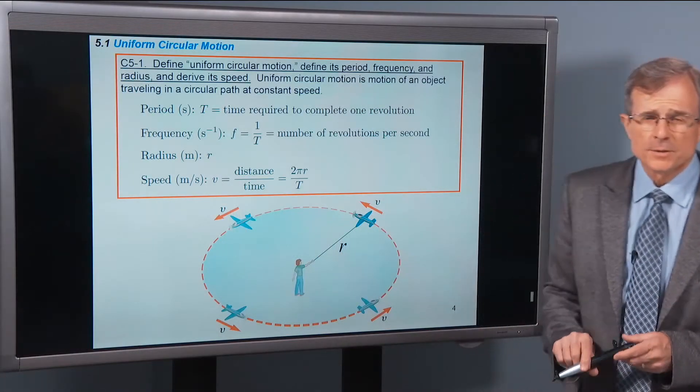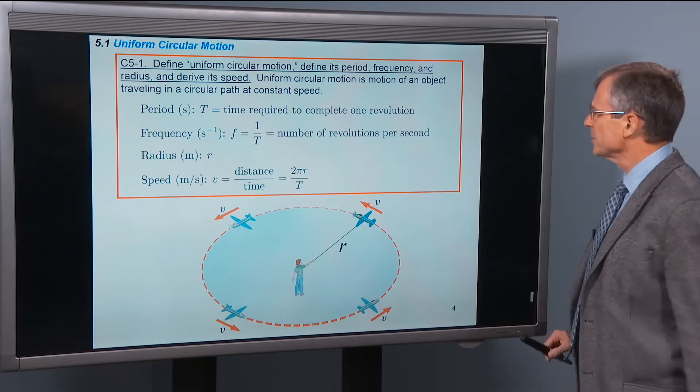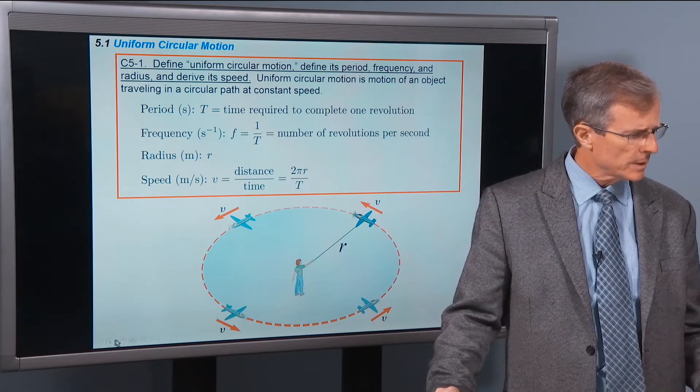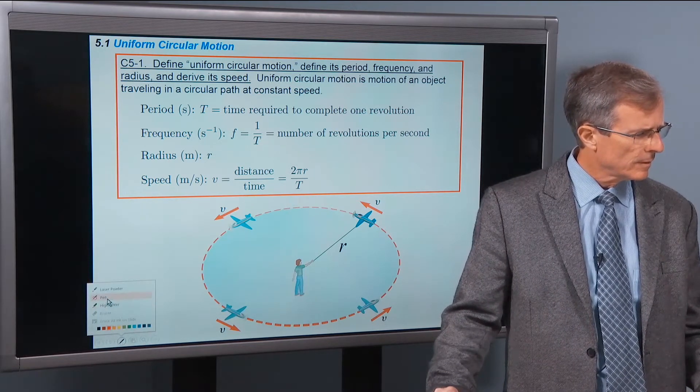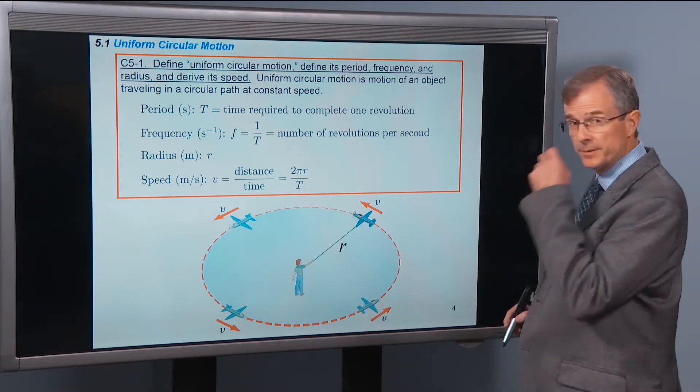Okay, let's define some mathematics here. Define uniform circular motion. Define its period frequency. And radius, and derive the speed.